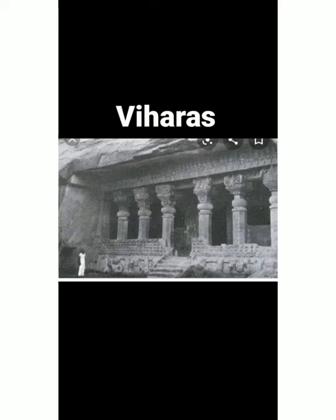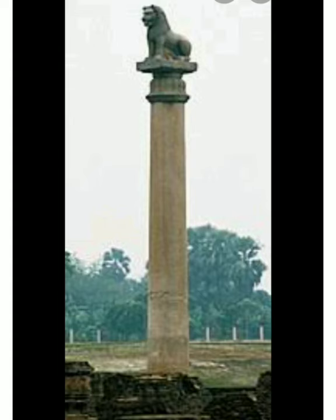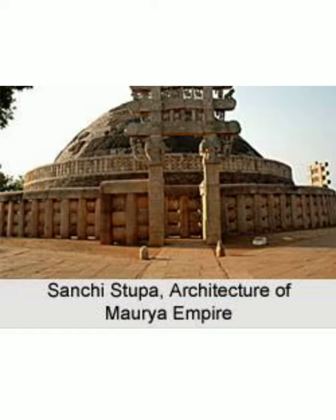You can see the pictures of the viharas and pillars. All these things give information about the Mauryan empire. The largest number of stupas throughout the empire was built during the time of Ashoka. Among all the stupas, the Sanchi stupa is one of the most famous. You can see the picture of the Sanchi stupa.